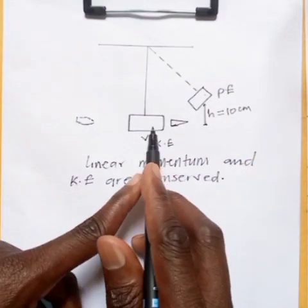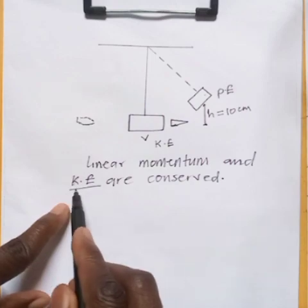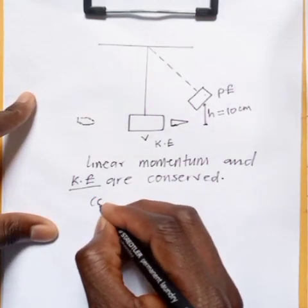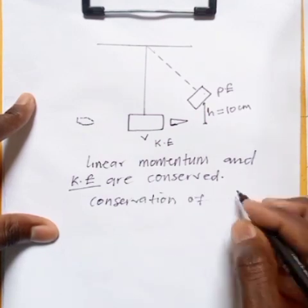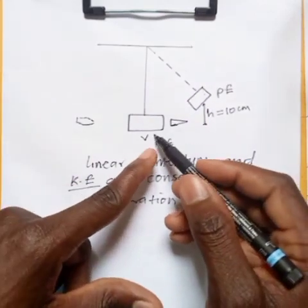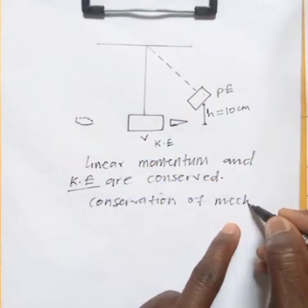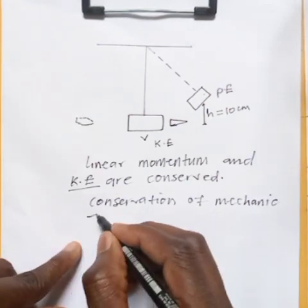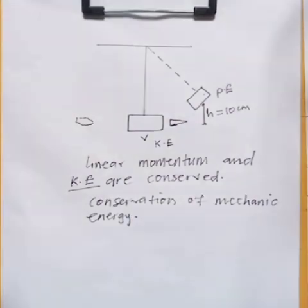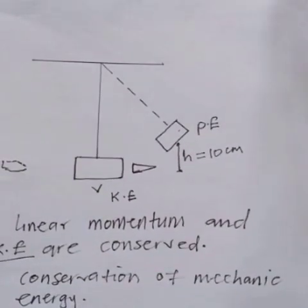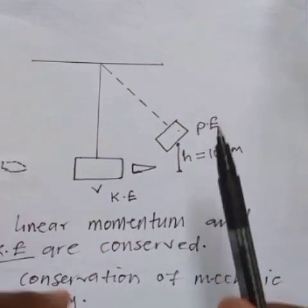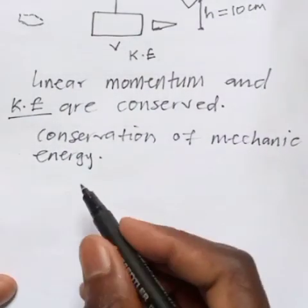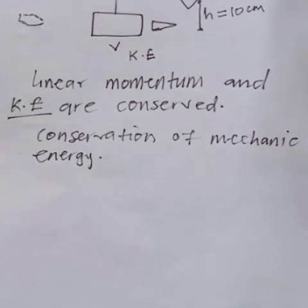Since the problem involves the block moving up and down, we're going to use conservation of mechanical energy. Conservation of mechanical energy takes place here, meaning that kinetic energy at the bottom must be equal to the potential energy at the top. That is according to the conservation of mechanical energy.